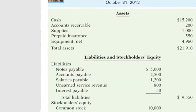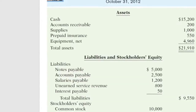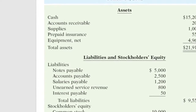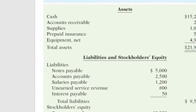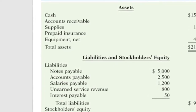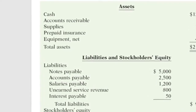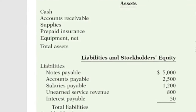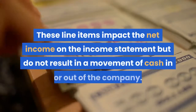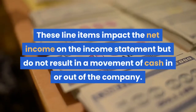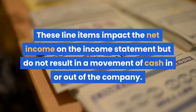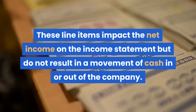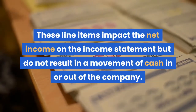Then changes in balance sheet line items, such as accounts receivable and accounts payable, are either added or subtracted based on their previous impact on net income. These line items impact the net income on the income statement but do not result in a movement of cash in or out of the company.